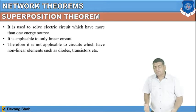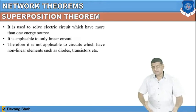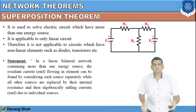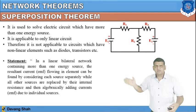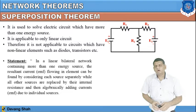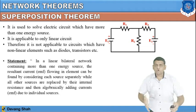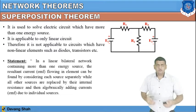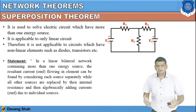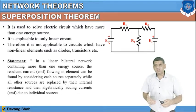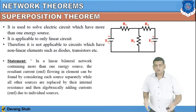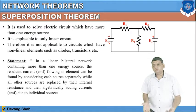The Superposition theorem is not applicable to circuits which have non-linear components or devices like diodes, transistors, etc. The statement of the Superposition theorem is: in a linear bilateral network containing more than one energy source, the resultant current or EMF flowing in any element can be found by considering each source separately, while all other sources are replaced by their internal resistance, and then algebraically adding the currents or EMFs due to the individual sources.